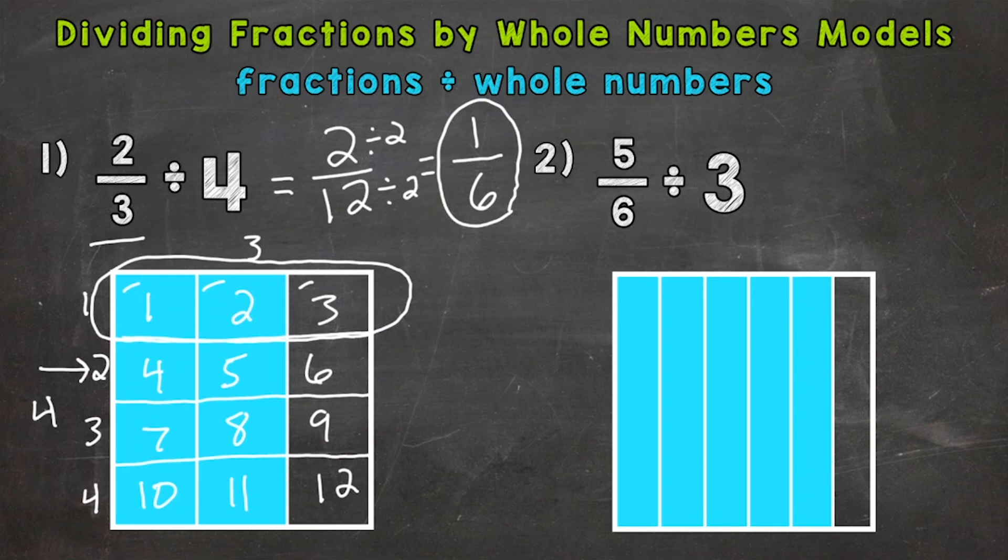So to recap, we started with two-thirds, split it into four equal groups, and then we picked one of those groups to see what it equals. It equaled two-twelfths. Then we simplified.